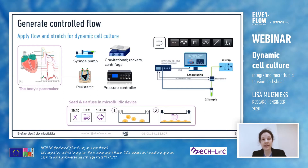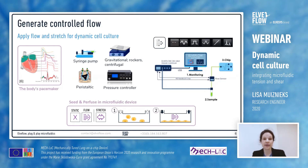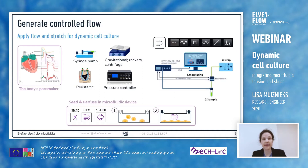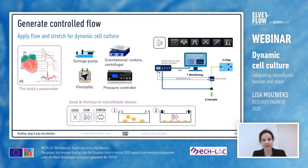The pressure controller doesn't just control the flow of liquid through your system. It can also be used to apply tension or stretch to a membrane that the cells are sitting on, and this can be done by controlling the flow of pressurized air or vacuum.